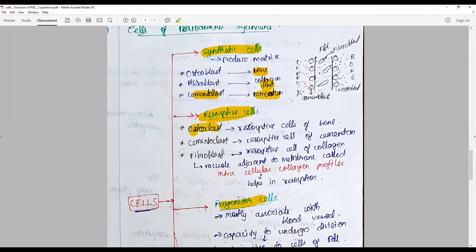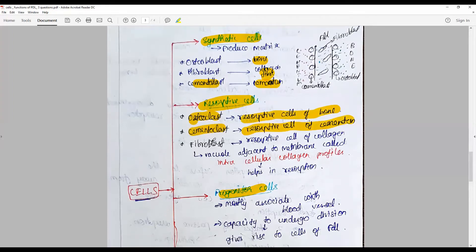Resorptive cells are the osteoclasts, multi-nucleated giant cells situated in the Howship's lacunae, responsible for the resorption of bone. Cementoclasts, very rarely seen, are resorptive cells of the cementum. If present, they are indicative of a pathological nature.